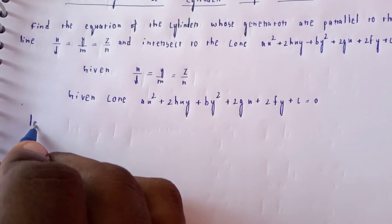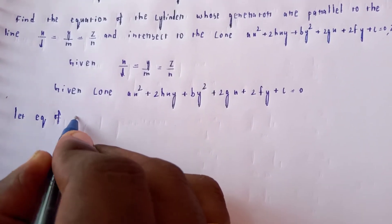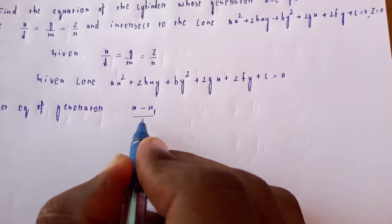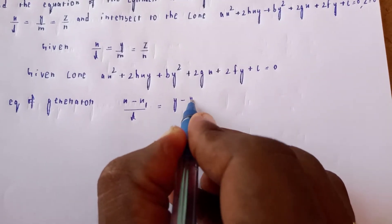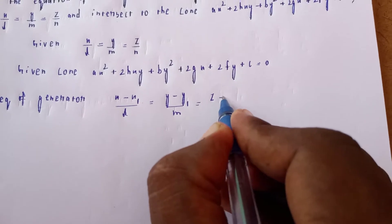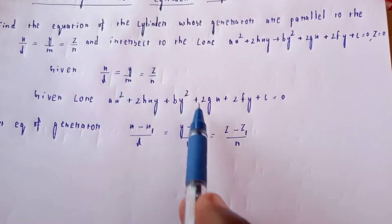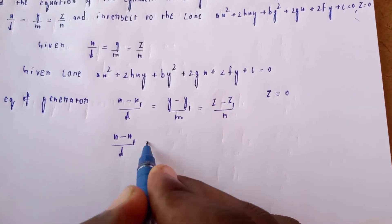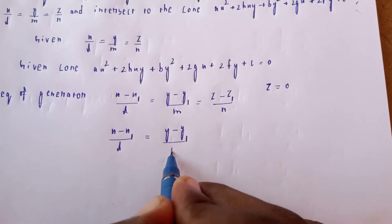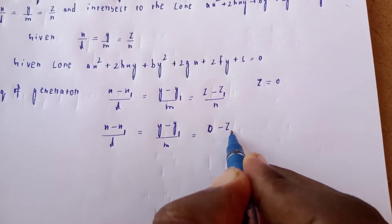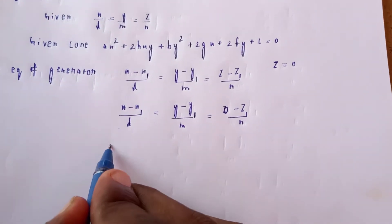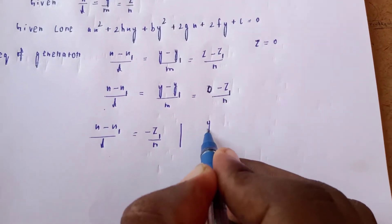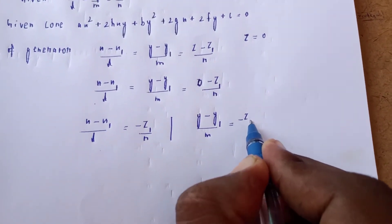Let the equation of the generator be: x - x1 / l = y - y1 / m = z - z1 / n. This is the standard formula for the generator line.